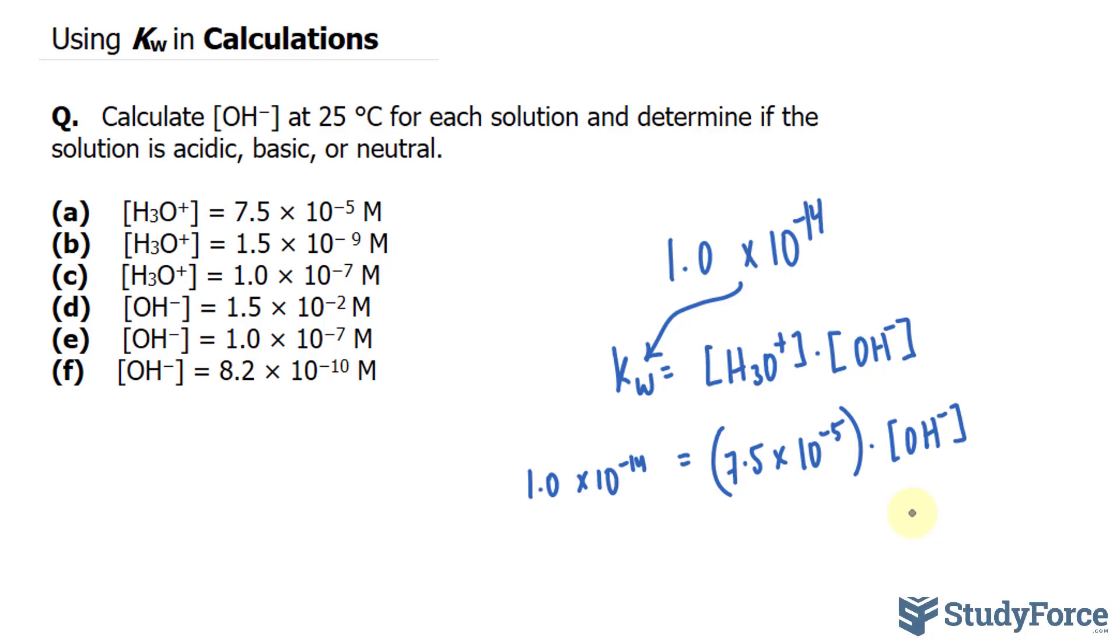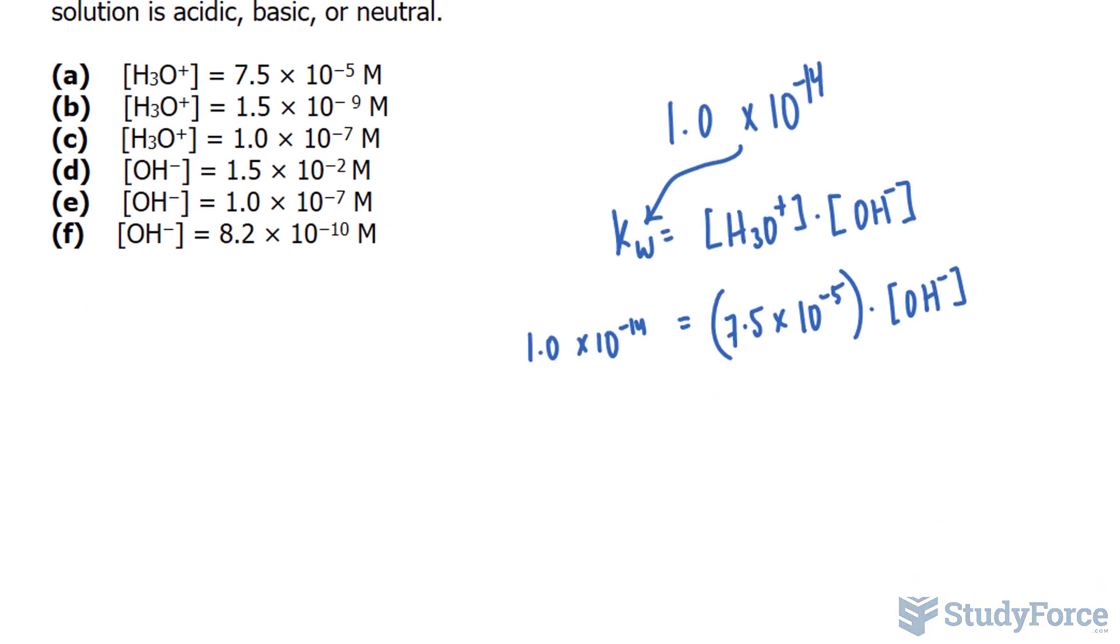So solving this isn't hard. We will divide both sides of this equation by 7.5 times 10 to the power of negative 5. And if we find out that the concentration of hydronium is greater than the concentration of hydroxide, the solution is acidic. Let's see if that's the case.